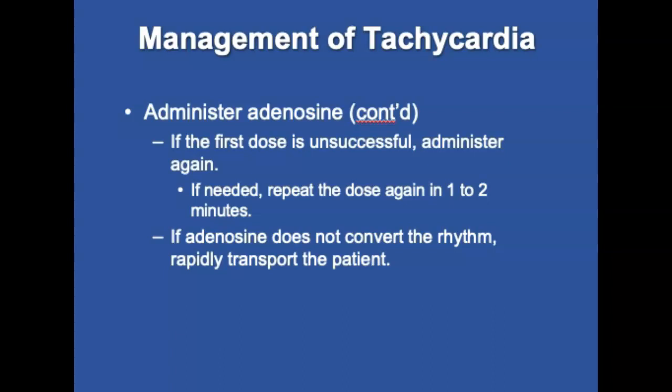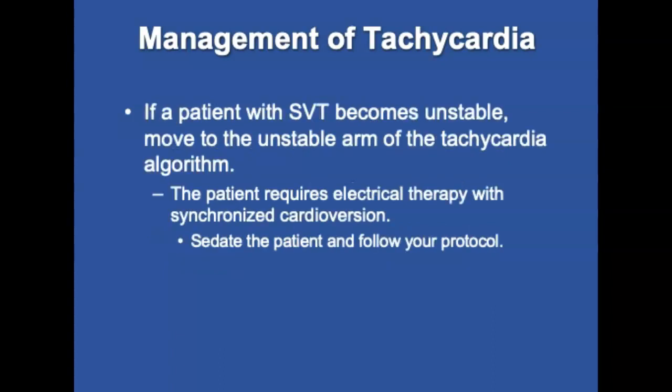If adenosine does not convert the rhythm, rapidly transport the patient to a medical facility. If at any time SVT becomes unstable, move to the unstable arm of the tachycardia algorithm. The tachycardia patient in an unstable condition requires electrical therapy with synchronized cardioversion. Cardioversion is indicated for V-tach and SVT associated with severely compromised cardiac output. Sedate the patient first if performing cardioversion on a responsive patient; benzodiazepines such as Valium or Versed are commonly administered.